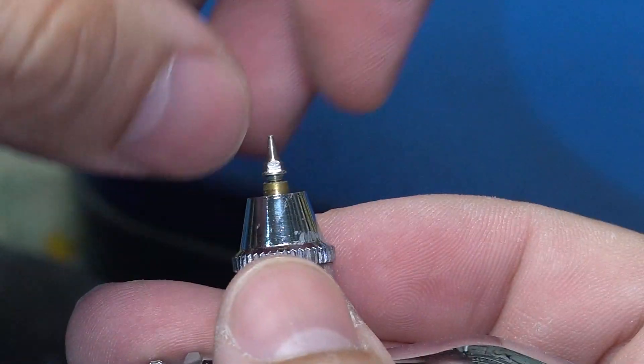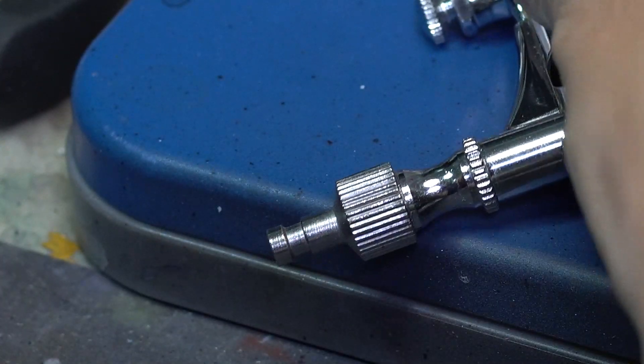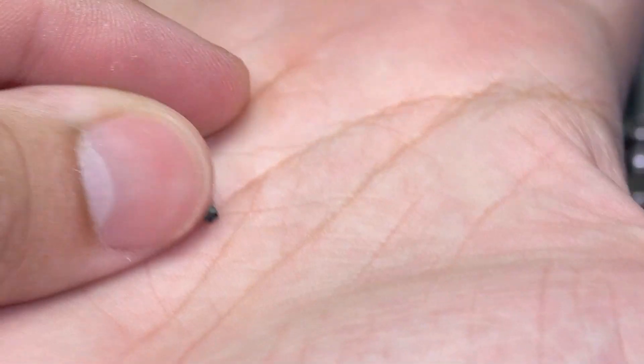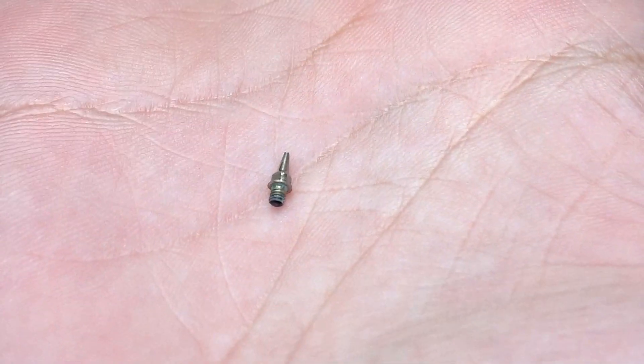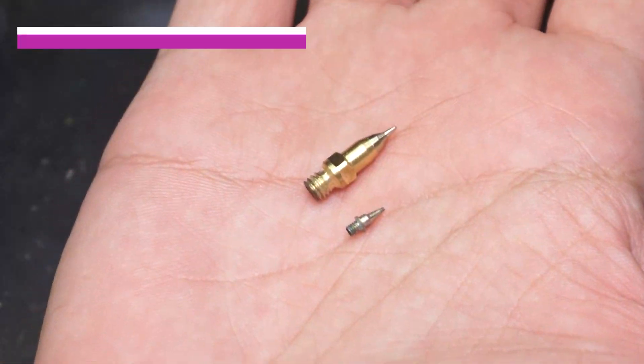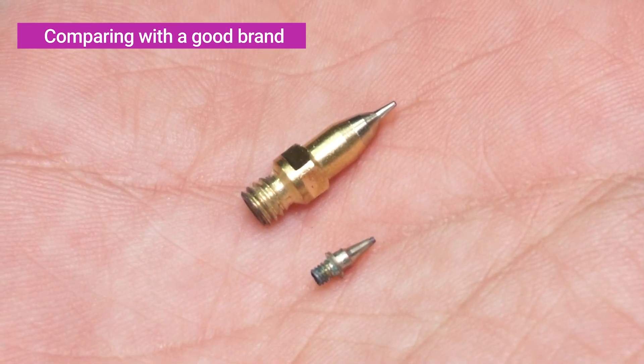And here's another problem: most of those generic airbrushes don't have spare parts to buy so you probably need to buy another airbrush. Do you see where I'm getting? When I was a beginner myself I broke the tip of my generic airbrush three times and yes, I had to buy three new airbrushes. And this wasn't just me. I know some friends that have the same problem and I know some subscribers of my channel who also broke the tip.